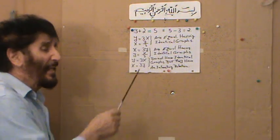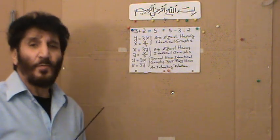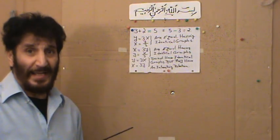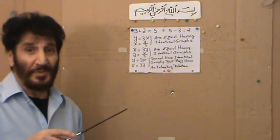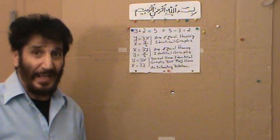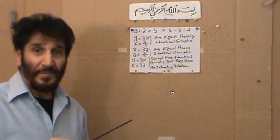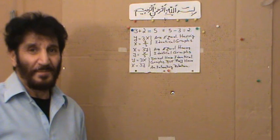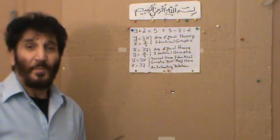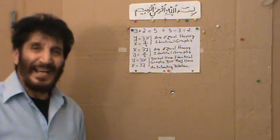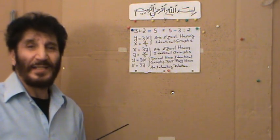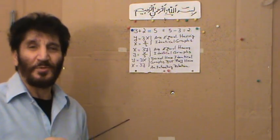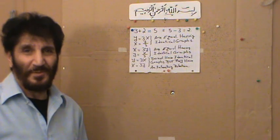Now if I interchange the rule of correspondence between x and y — instead of writing y equals 3x I write x equals 3y — the rule of correspondence has changed, and the graphs, whether analytical or geometrical, will not be identical. But there is a meaningful relation between the graph of y equals 3x and the graph of x equals 3y, and that is what we are going to look at.